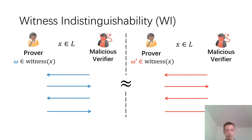We require an additional property of the interactive proof system, which is witness indistinguishability. It is defined as follows: for any malicious verifier, it cannot distinguish between the case where the prover uses a witness ω versus the case where the prover uses another witness ω′ to compute the protocol.